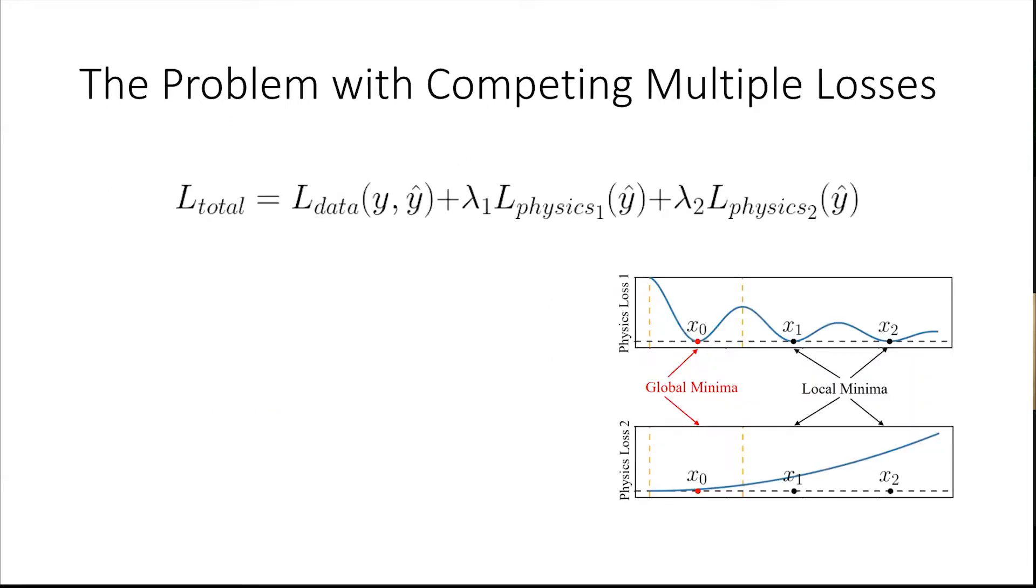This problem is even more pronounced when there are multiple loss terms added together. In that case the interplay between those terms becomes tricky. Moreover multiple loss terms can compete. For example, one can see that optimizing physics loss one first could lead to being stuck in one of these local minima instead of the global minimum. Whereas if emphasis was given to physics loss two first and then shifted to physics loss one we would get to the global minima. This suggests that an adaptive tuning method would be essential for some problems.